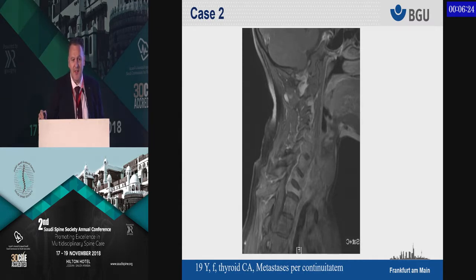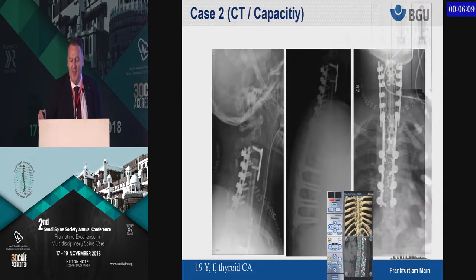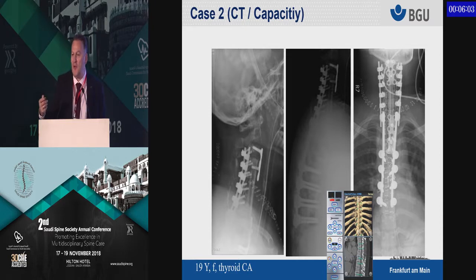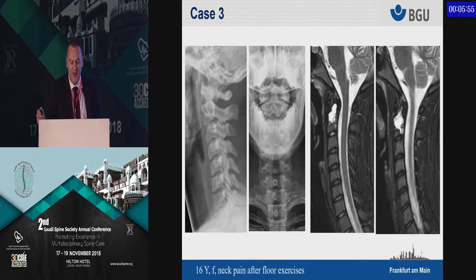That's another case — a young lady with a very significant thyroid cancer going into the spine. You see the resection and the amount of tumor covering the whole cervical spine as well as the upper thoracic spine. In these cases you need to address a high volume, and once again the CT scanner is the one you should use for navigating something like that.